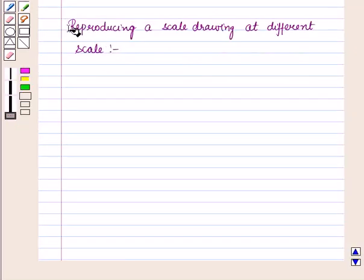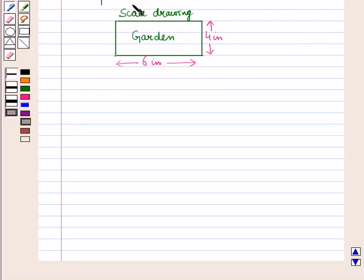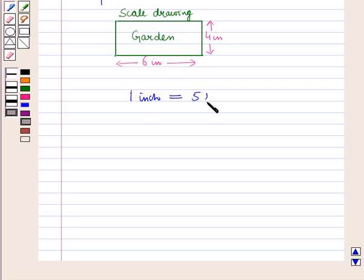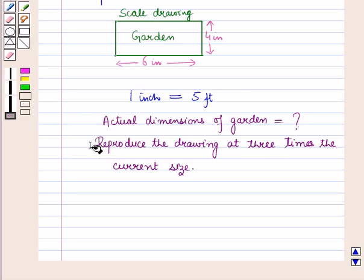Now let us learn how to reproduce a scale drawing at a different scale. In this example, Julie has a scale drawing of her garden. If each inch on the scale drawing equals 5 feet in actual, then we have to find the actual dimensions of her garden and also reproduce the drawing at 3 times the current size.